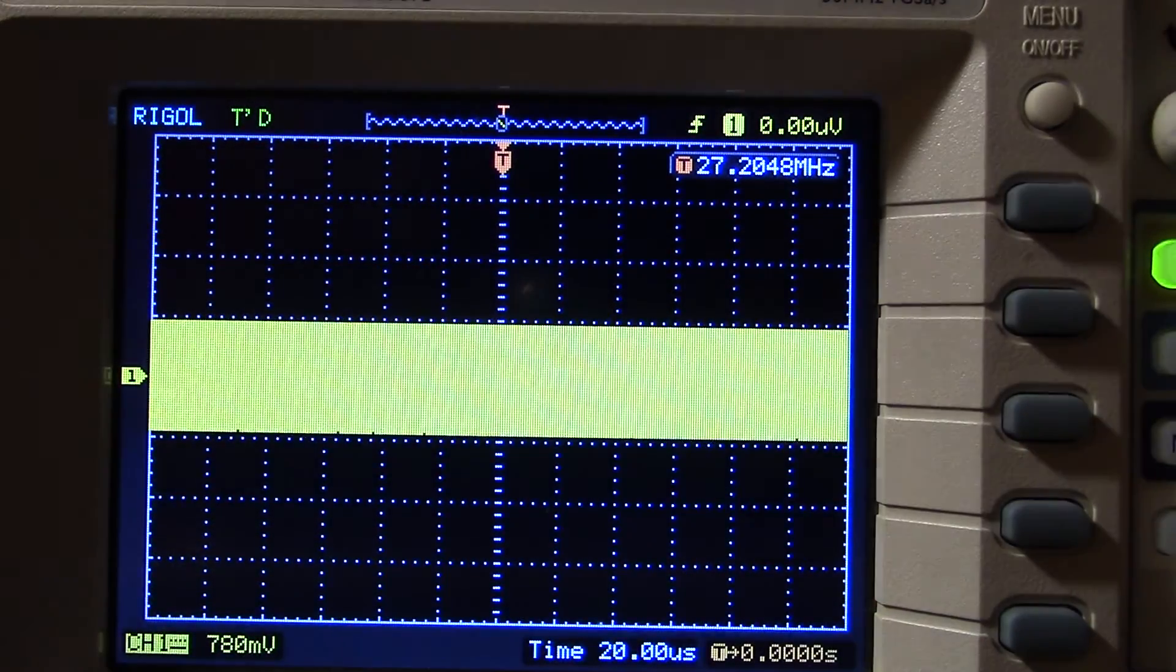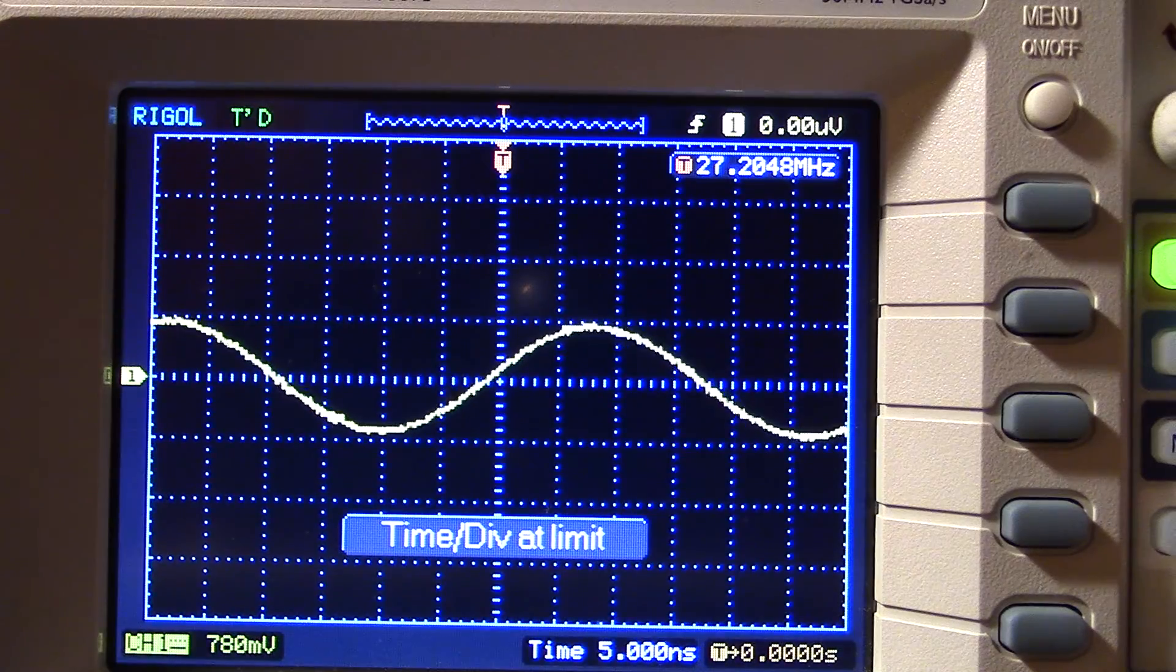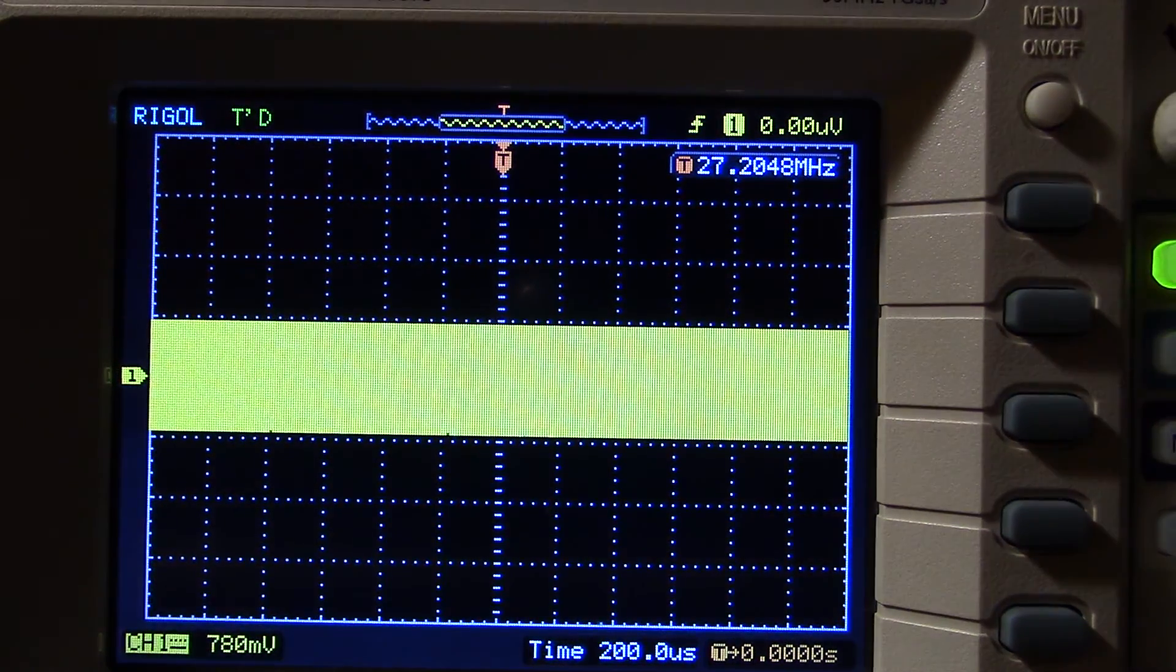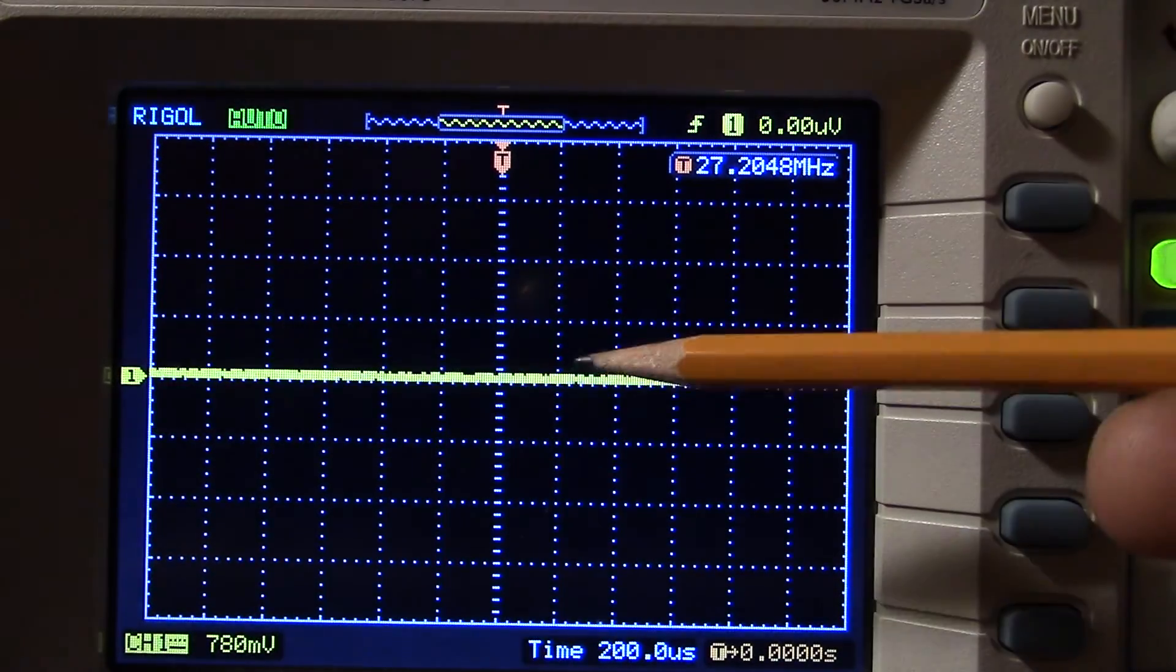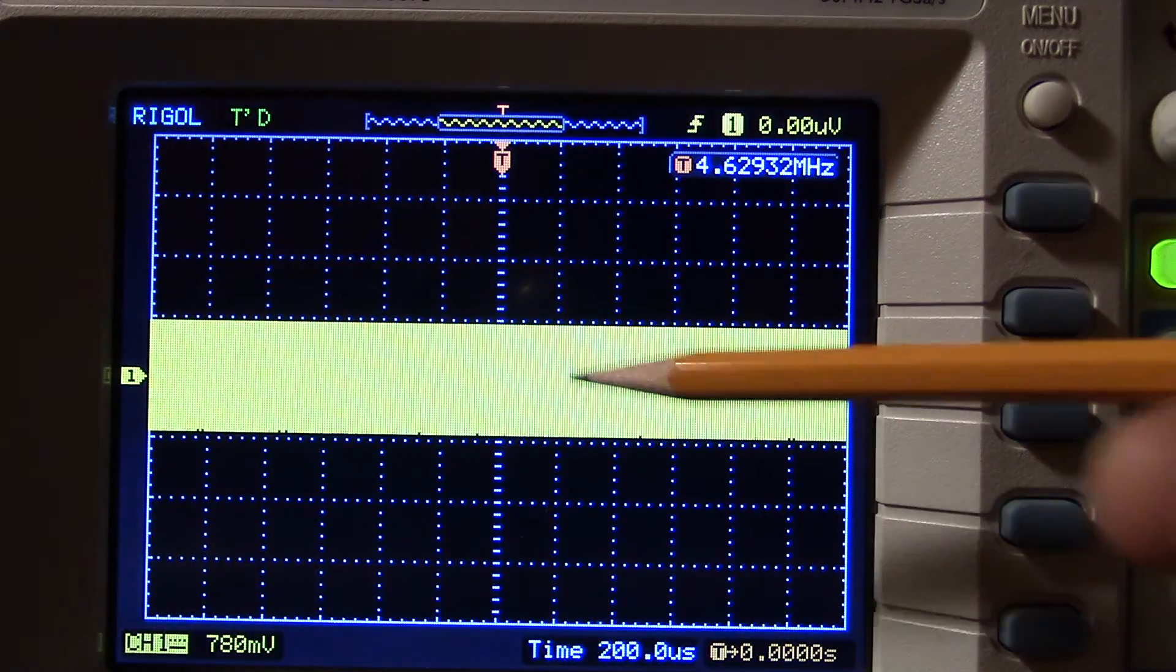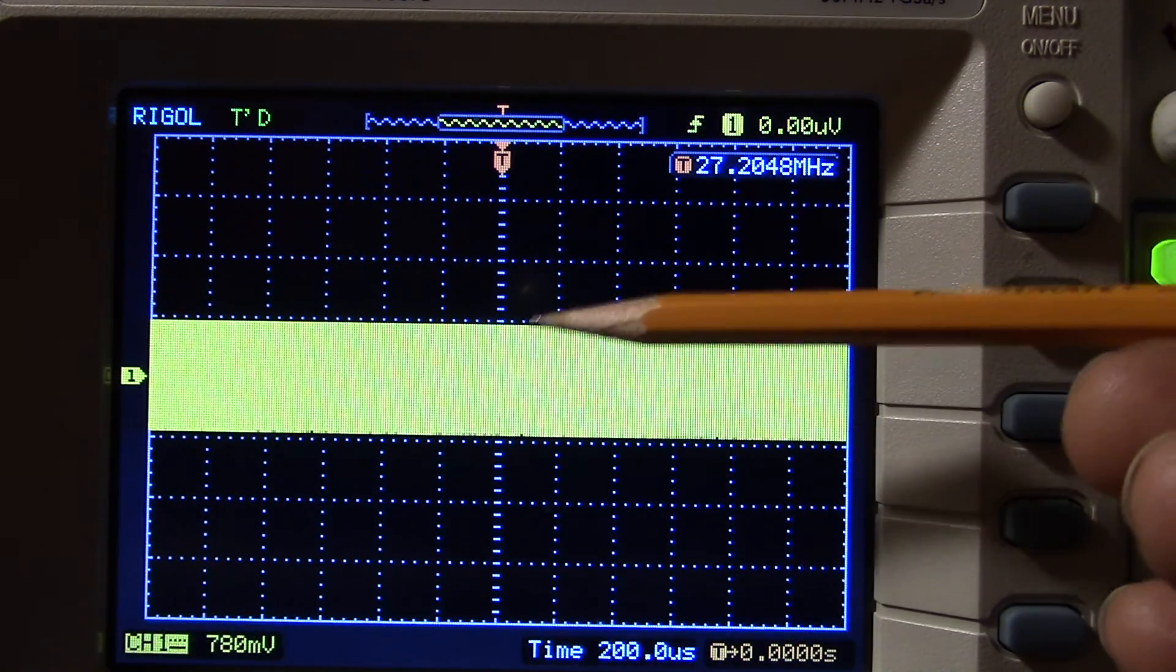Alright, so this is keyed up. Like I said, this is the condensed. This is that carrier condensed so you can see the audio. Alright, this is zero output right here. Zero output. When I key up, the oscilloscope senses the voltage and displays it.